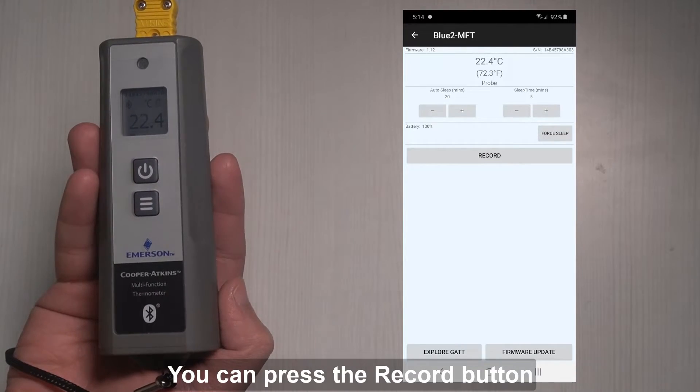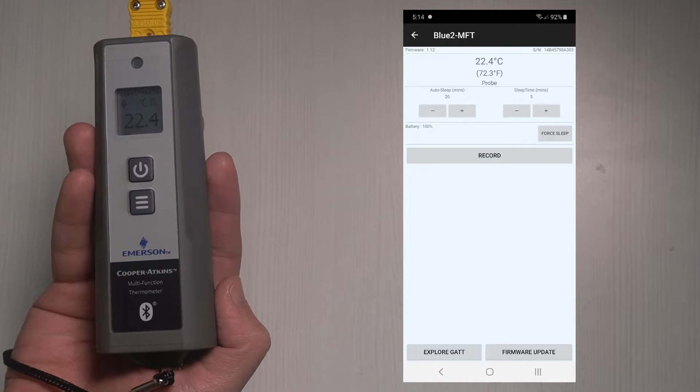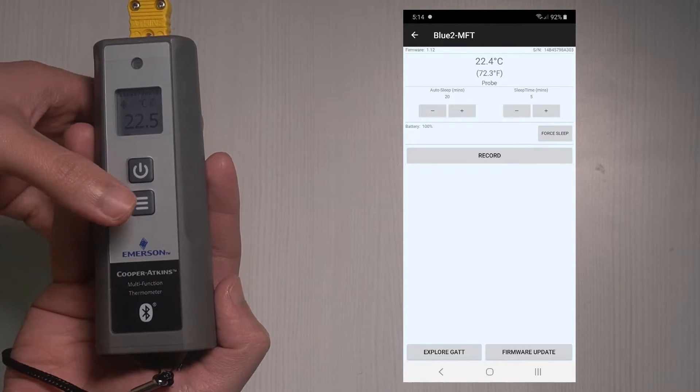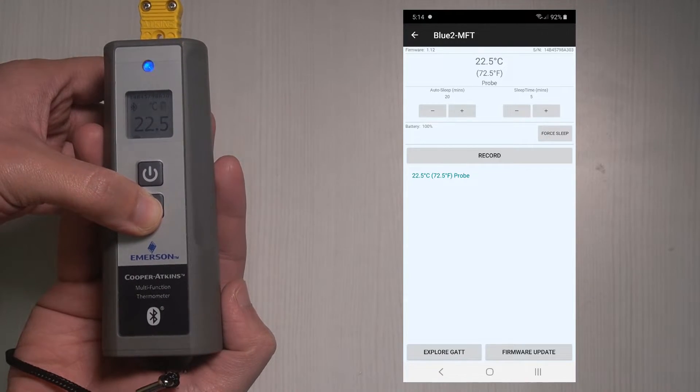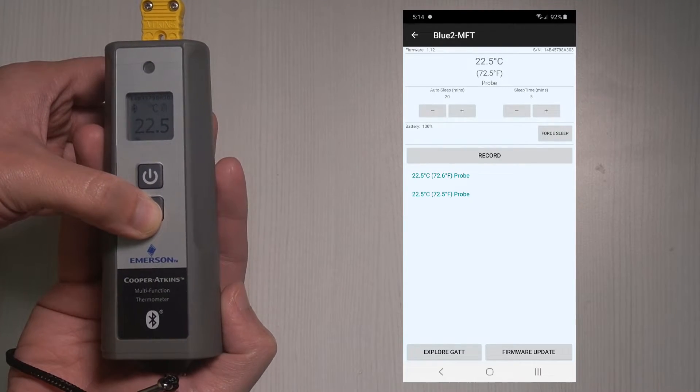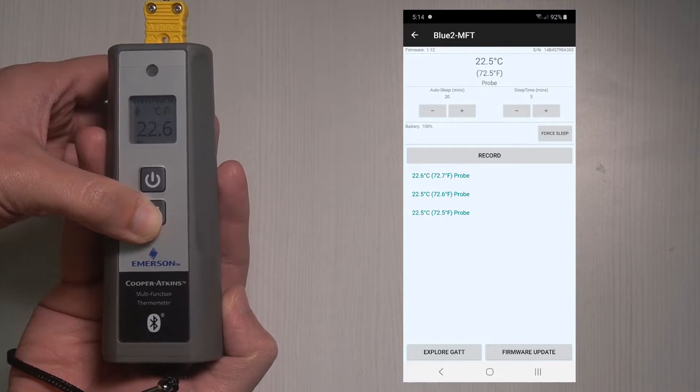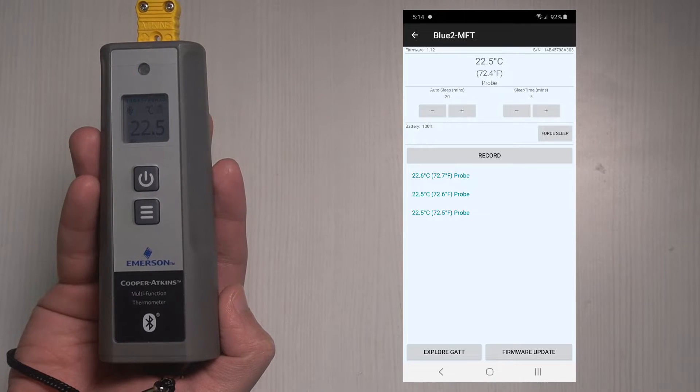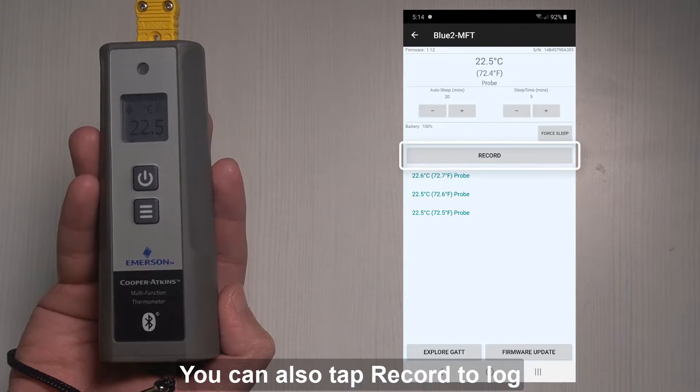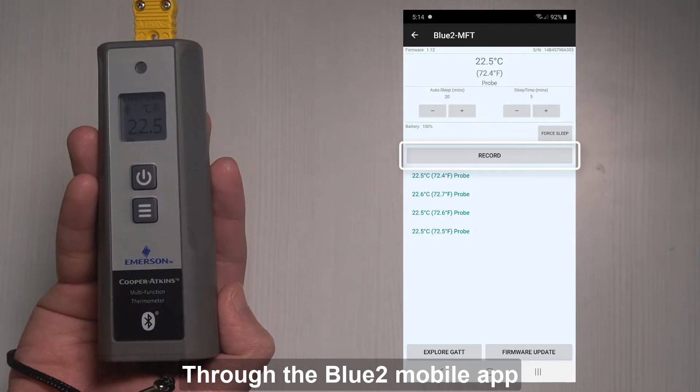You can press the record button to lock the temperature. You can also tap record to log through the Bluetooth mobile app.